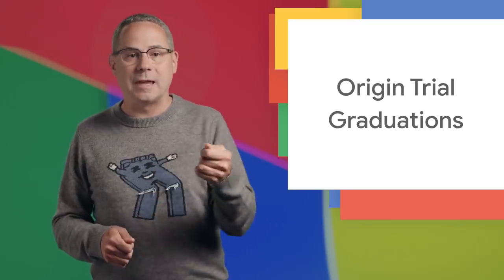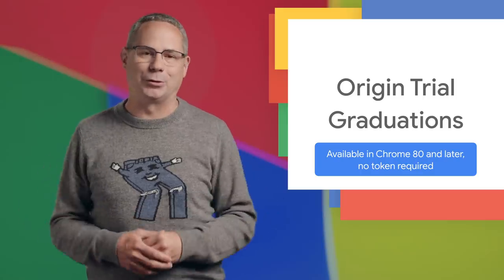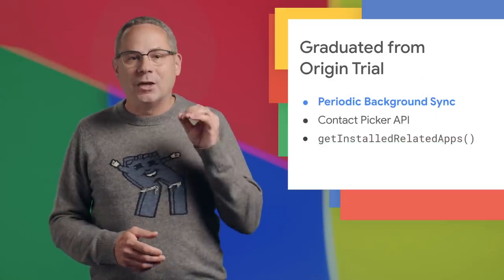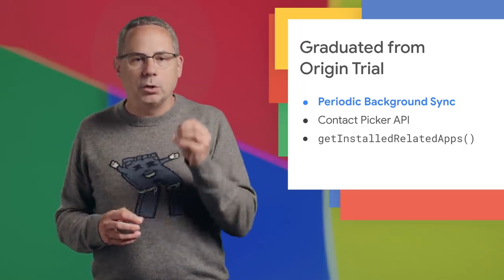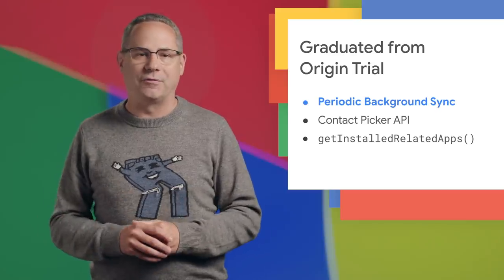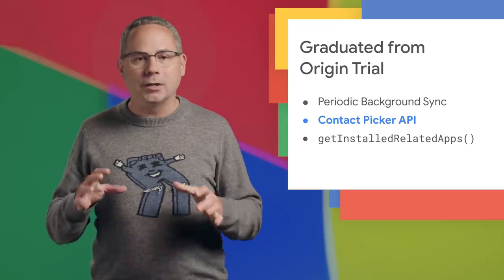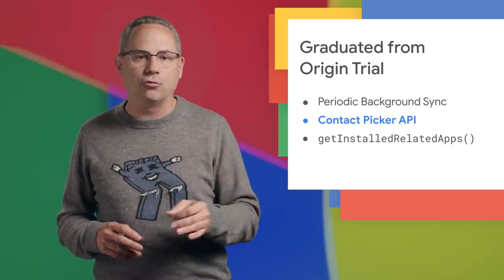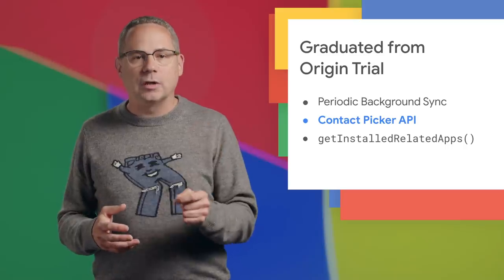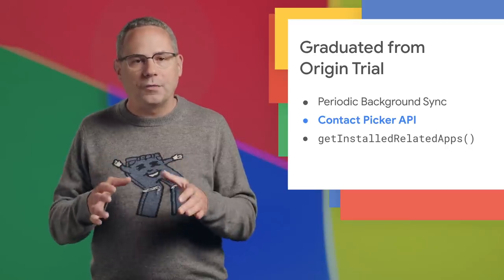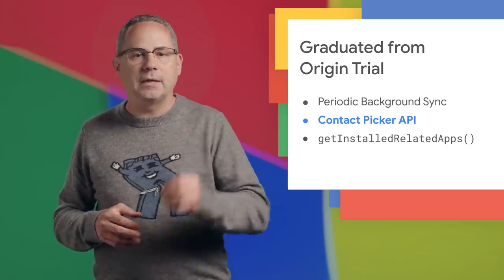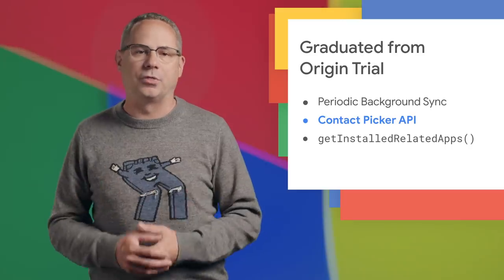There are three new capabilities that graduated from origin trial to stable, allowing them to be used by any site without a token. First up is Periodic Background Sync. It periodically synchronizes data in the background so that when a user opens your installed PWA, they always have the freshest data. Next is the Contact Picker API, an on-demand API that allows users to select entries from their contact list and share limited details of those selected entries with a website. It allows users to share only what they want, when they want, and makes it easier for users to reach and connect with their friends and family.